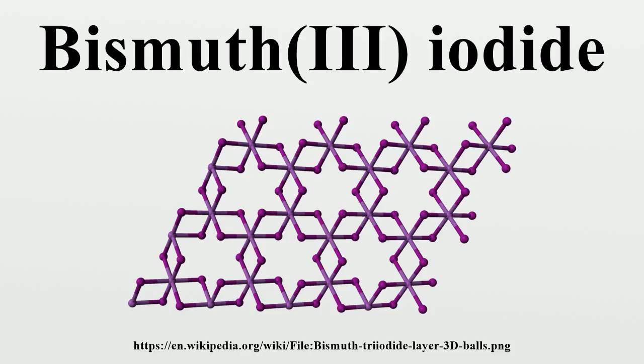Bismuth iodide forms iodobismuthate anions when heated with halide donors.